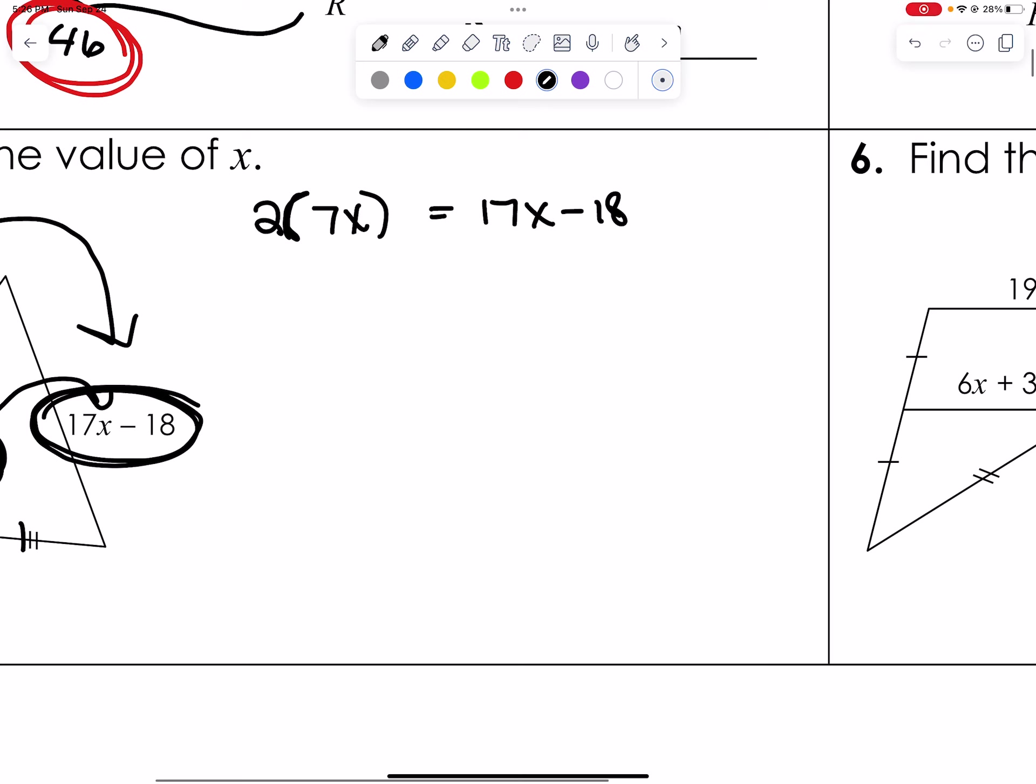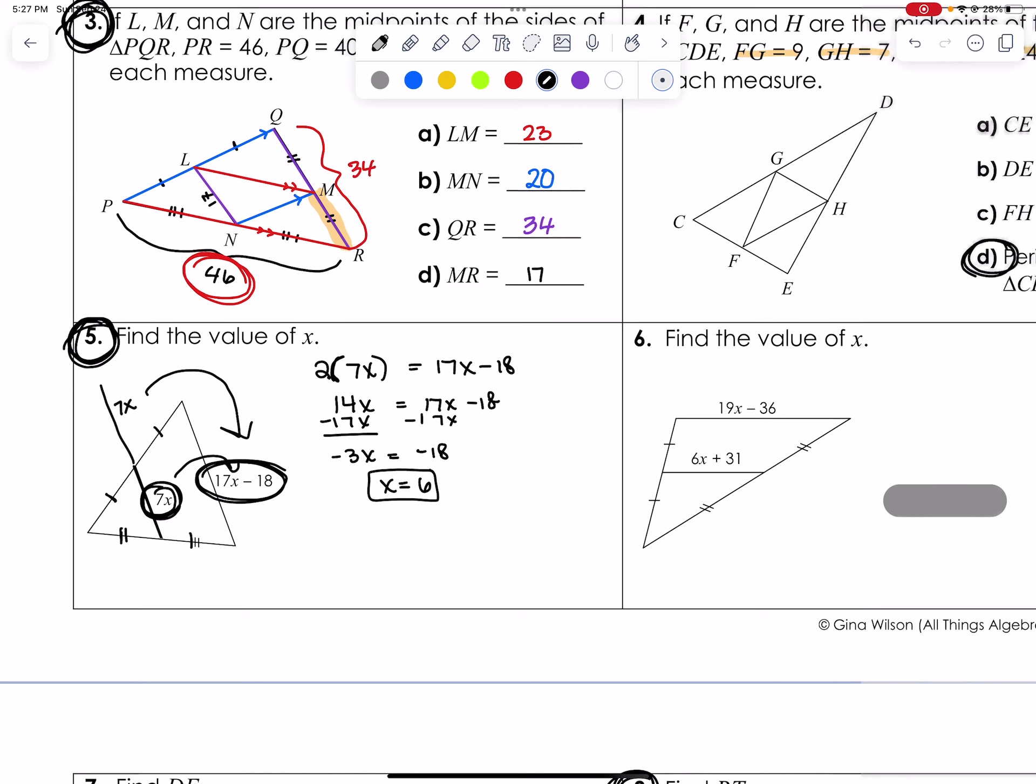So from here, quite simple. 14x equals 17x minus 18. I can subtract 17, oh I tried 14 by mistake, 17 on both sides. I'm left with negative 3x equals negative 18, and negatives and negatives, x equals 6. That is all that this problem asked of us.